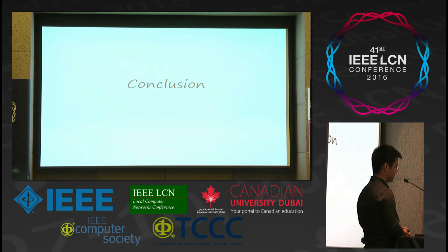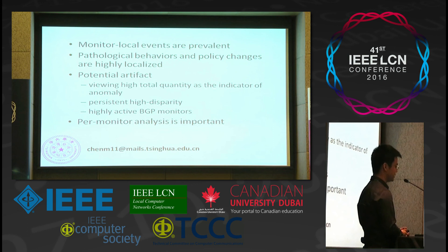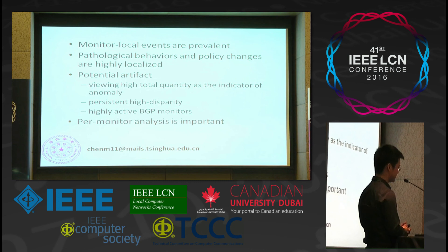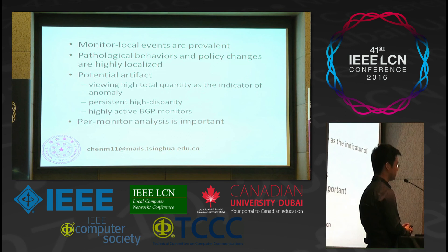In conclusion: monitor-local events are prevalent on the internet; pathological behaviors and policy changes are highly localized; and there are a range of artifacts if one uses aggregated data, such as viewing high total quantity as an indicator of anomaly, or ignoring persistent high disparity, or ignoring highly active BGP monitors. Our suggestion is that per-monitor analysis is important in any BGP measurement study, because it is important to consider differences between monitors. Due to time limitations, many details are not presented in this talk — if you have questions, please contact us through the provided email.